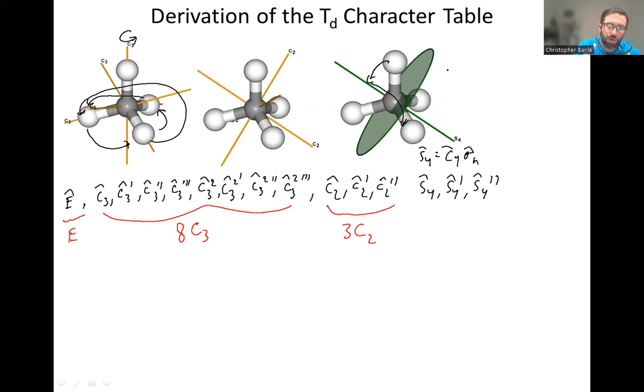Now whenever we have S4s, or any improper rotation axes with this S notation, we want to see what happens if we run them multiple times. So if we do an S4 twice, what is that? That's a C4 twice followed by sigma H twice. Well, sigma H twice would be a flip from top to bottom to bottom to top, when you flip something in a mirror plane.